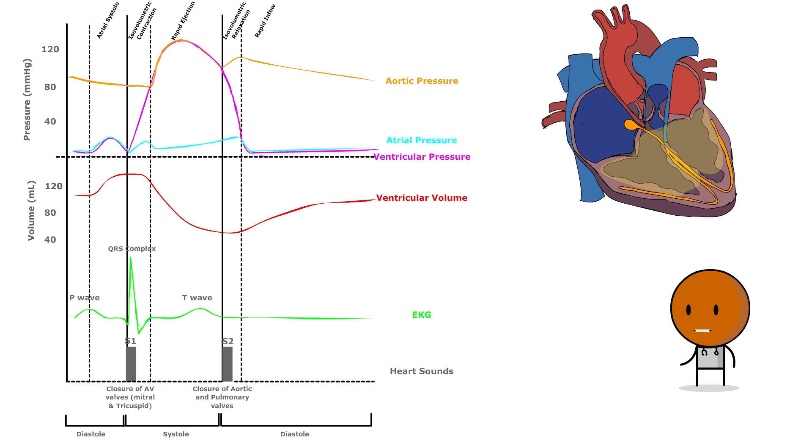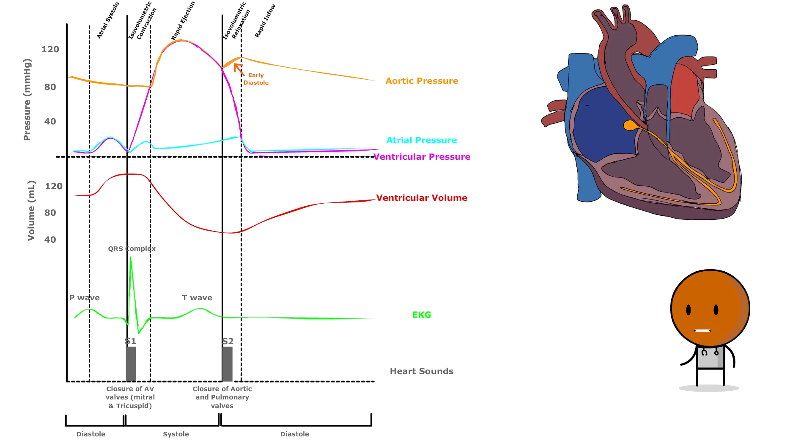So the second phase is early diastole, or isovolumetric relaxation. After ventricular systole, the ventricles begin to relax, and the aortic valve closes as ventricular pressure falls below aortic pressure.